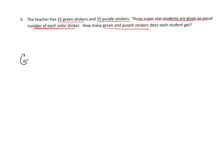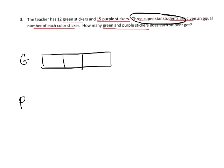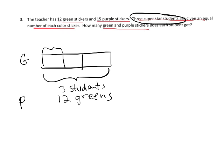Okay, green and purple. Since we have three students, I'm gonna model and label this with our three students. We have 12 greens, and then the big question is: how much does one student get?